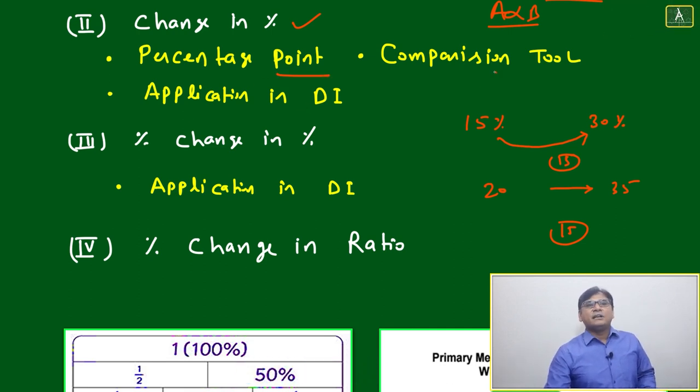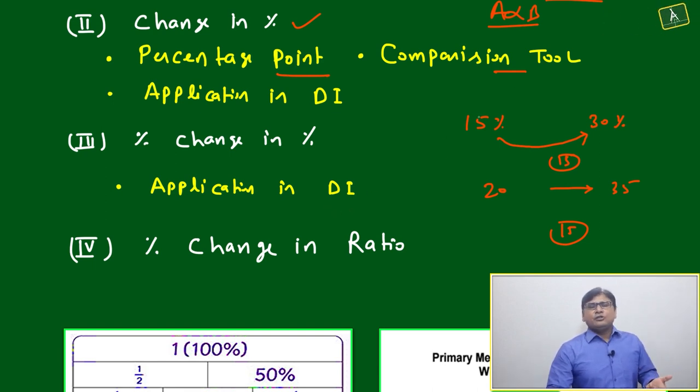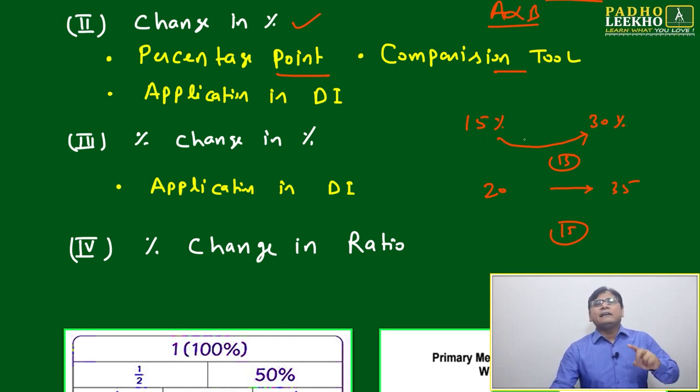We can say it's a kind of comparison tool, and it will be an application in DI and many types of questions. Change in percentage always tells in numbers—like 20 to 35, it is 15.